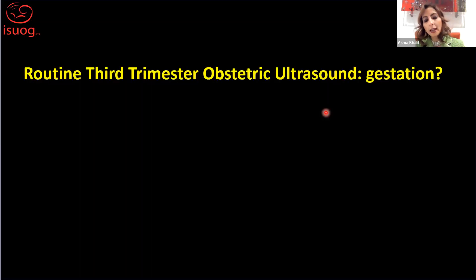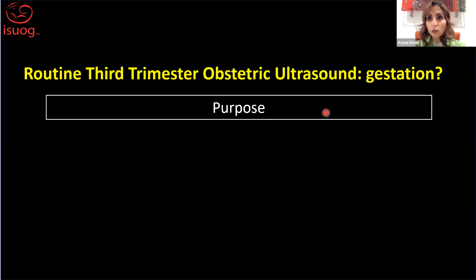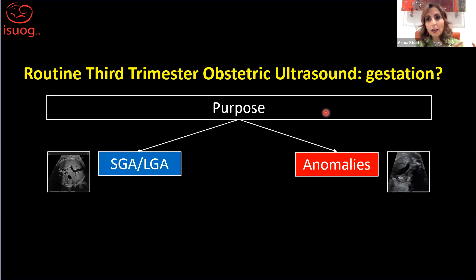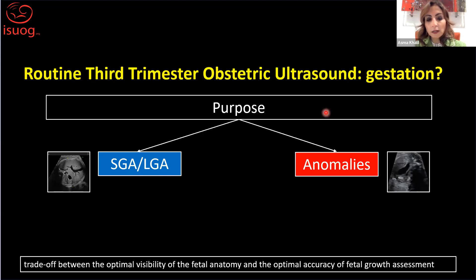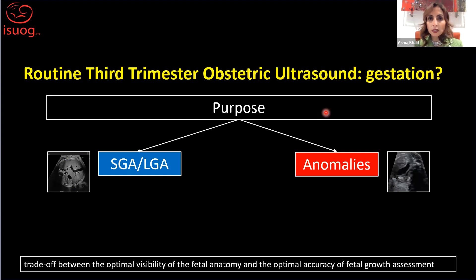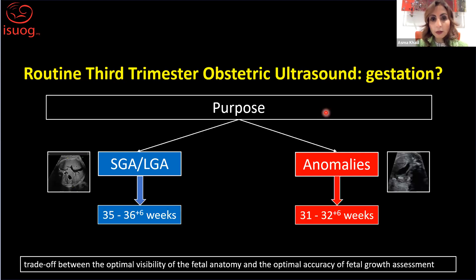If we plan a routine third trimester obstetric ultrasound, what gestational age window should we plan it for? That depends very much on the purpose of the scan — whether it's mainly to look for growth abnormalities like small or large babies, or to detect anomalies in the third trimester. There is a trade-off between the optimal visibility of fetal anatomy, which tends to decline later in gestation, and the optimal accuracy of fetal growth assessment, which is more accurate later in the third trimester for detecting small or large babies. I'll show you the evidence in a moment.